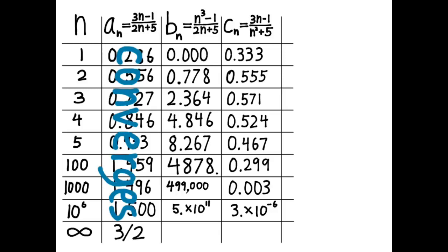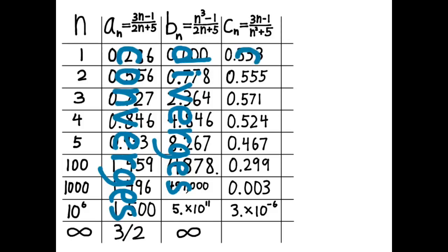And in the second column, the numbers seem to be growing without bounds. So we would say they diverge, and you might put the infinity symbol in that column. In the third column, the numbers seem to be getting smaller and smaller. So you might say this one converges to zero.